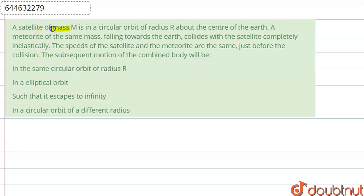We are given that there is a satellite of mass m in a circular orbit of radius r about the center of the earth. A meteorite of the same mass falling towards the earth collides with the satellite completely inelastically. The speeds of the satellite and the meteorite are the same just before the collision. Then we have to find the subsequent motion of the combined body.